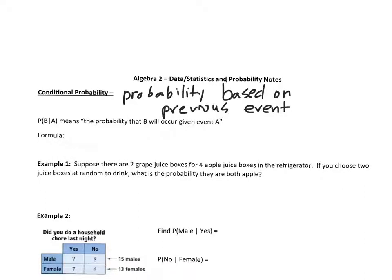Conditional probability is probability based on a previous event. This notation means the probability of B happening given that A has already happened. One formula we can use is: the probability of B given A equals the probability of A and B happening at the same time, divided by the probability of A.